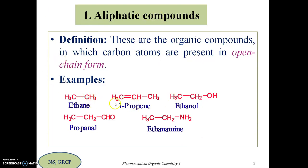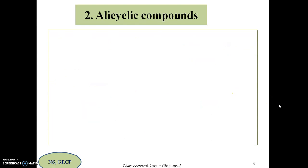If you observe the first two molecules — ethane and propene — they are made up of only carbon and hydrogen. So they are further known as hydrocarbons, that is, organic compounds which are made up of only carbon and hydrogen are known as hydrocarbons. This is about aliphatic compounds.